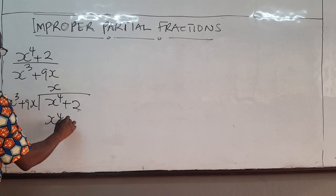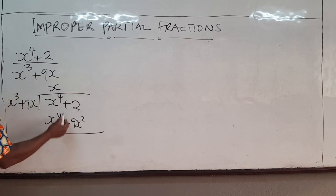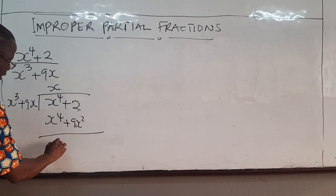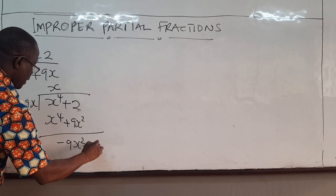x times this gives me 9x squared. If I subtract, this goes to 0. 0 comes here, I have negative 9x squared and then I have a 2.